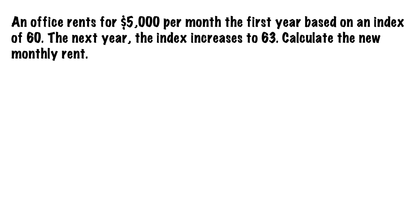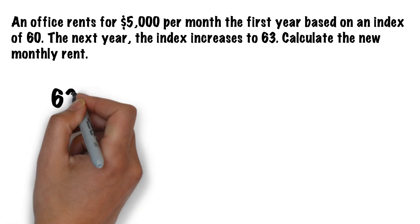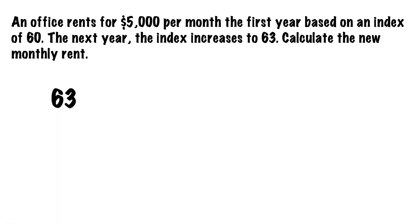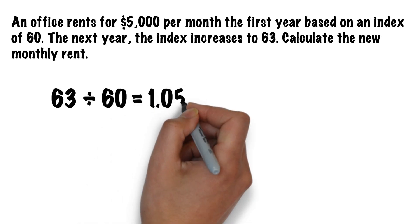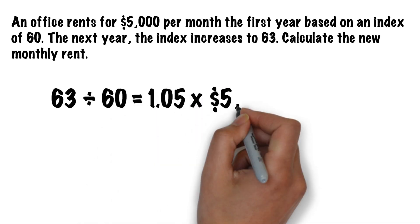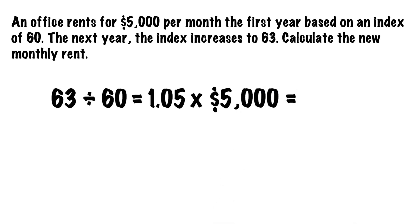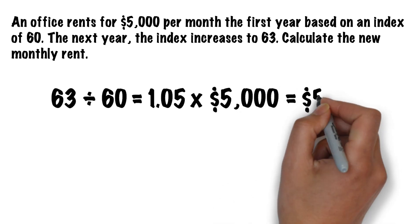Welcome back. Did you get five thousand two hundred and fifty? Here's the solution: take the new index, 63, divide by the old index, 60, to get 1.05. Multiply that by five thousand dollars to get five thousand two hundred and fifty dollars.